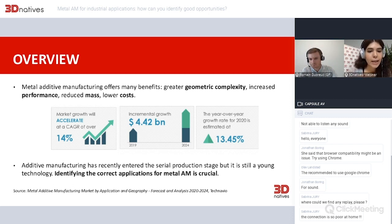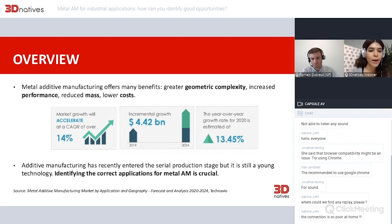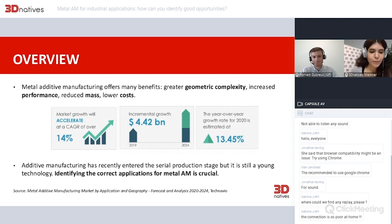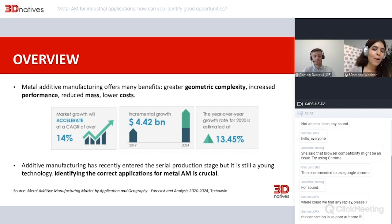The market is growing and we've seen more and more manufacturers coming up with metal additive manufacturing solutions. A study from Tecnavio predicts that the market growth will accelerate at a compound annual growth rate of over 14% from 2020 to 2024. This was before the COVID-19 global health pandemic, but the general trend is that Metal AM is growing and will continue to grow.